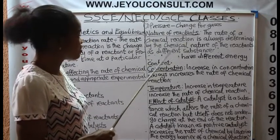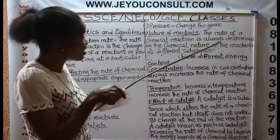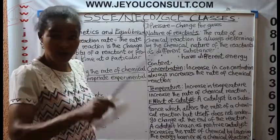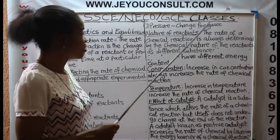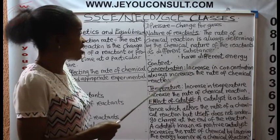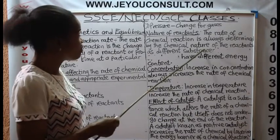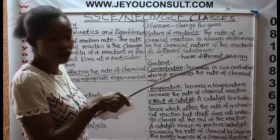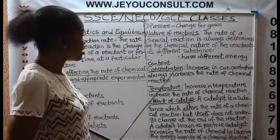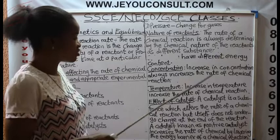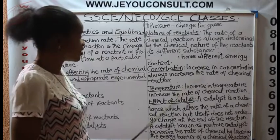This nature of reactant — what is explained in that? It depends on the nature of the reactant, and that determines whether the reaction will be high or low. If the reactant is a gas, solid, or liquid, it will determine how the reaction will go — whether fast or slow. Then concentration: the increase in concentration increases the rate of reaction.